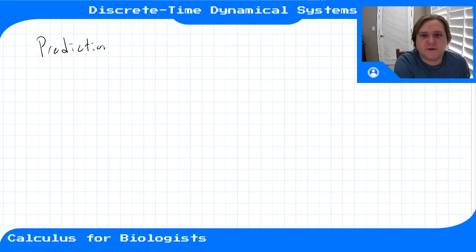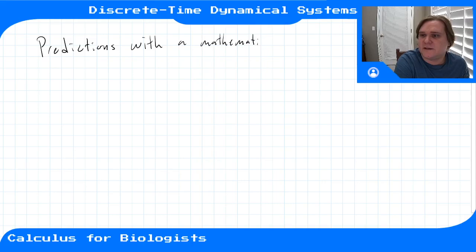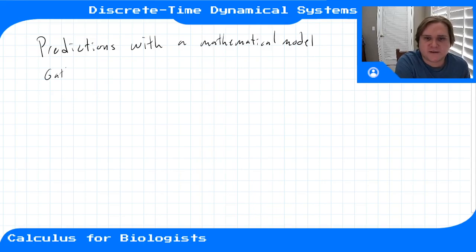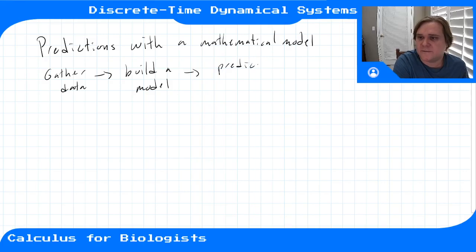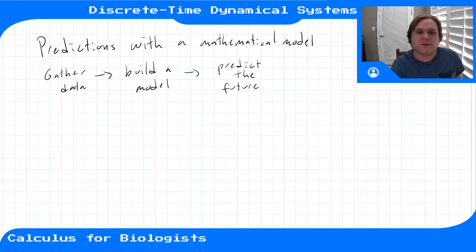Where we're going from here is we want to make predictions with our mathematical model. The basic framework is: you gather data, you use that data to inform or build your model, and then analyze or solve the model by hand or on the computer to predict the future. Your model will describe some rule that describes the data, and you can extend that rule into the future to predict what's going to happen next.